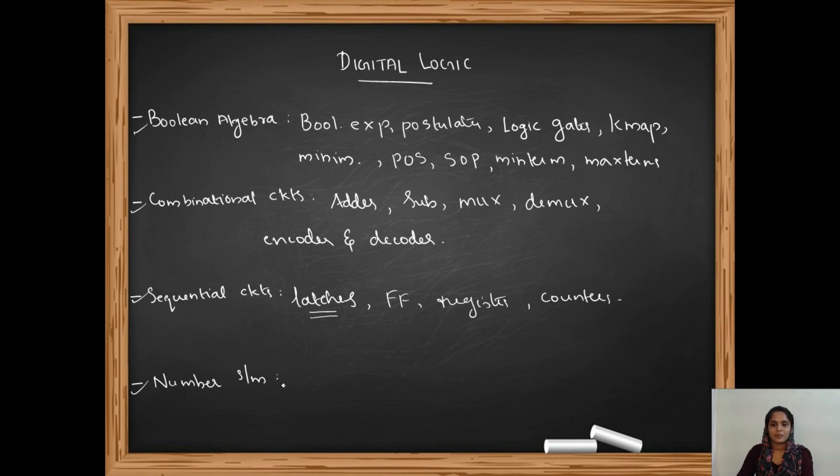Now comes our final topic, that is Number System. Number System is further divided into two: Fixed Number System and Floating Point Number System. Fixed Number System means Binary, Octal, Decimal, and Hexadecimal. Inside this we have to learn about the conversions between different number systems, for example Binary to Decimal, Decimal to Hexadecimal, etc. Then comes the Floating Point Number System, which is again divided into two: Single Precision and Double Precision.